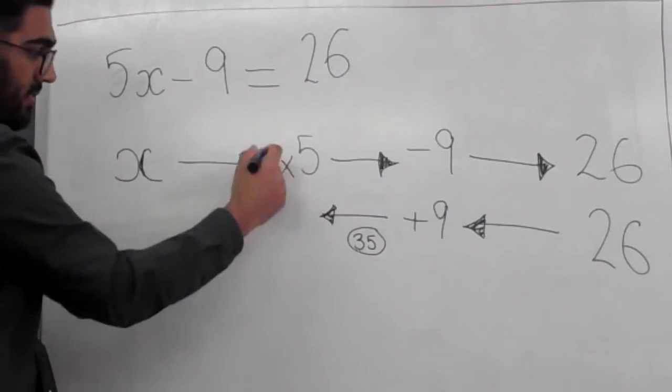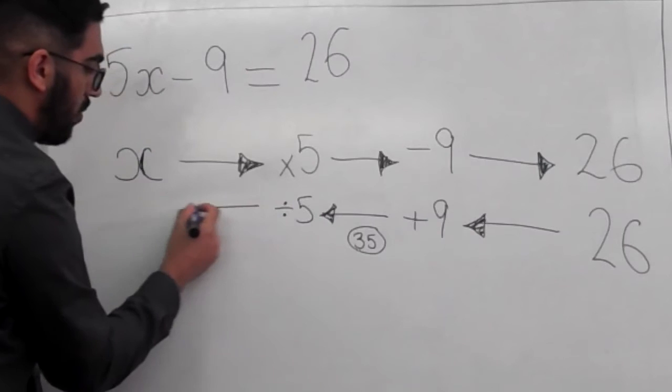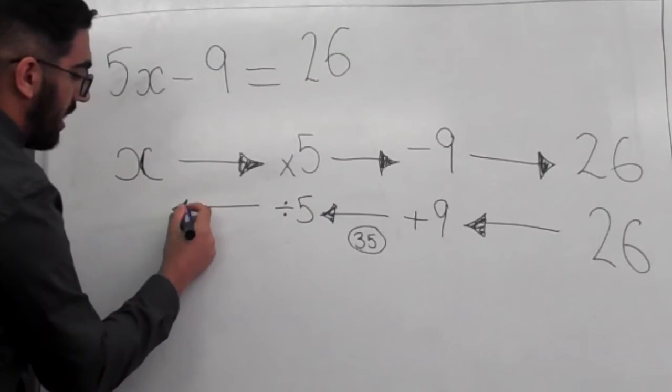Next, instead of multiplying by 5, we're going to divide by 5. And what that does is get us our answer.